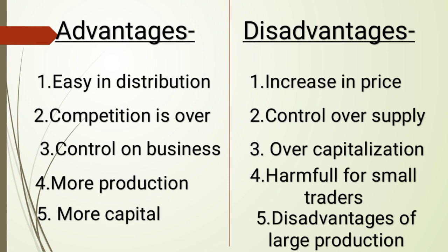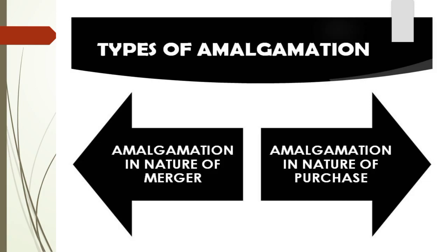The company also controls the supply. As studied in the law of demand, if supply is less, the price will rise. So there are chances of over-capitalization. It is also harmful for small traders, because the large company coming into the market can charge whatever price it wants, and it is a disadvantage for large-scale production as well.